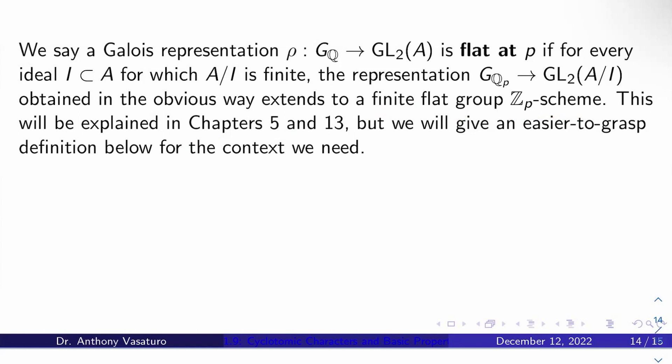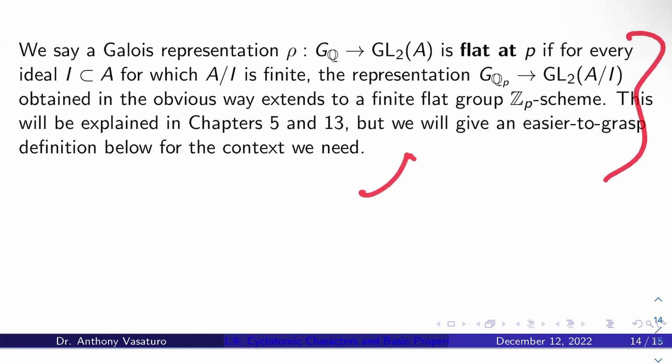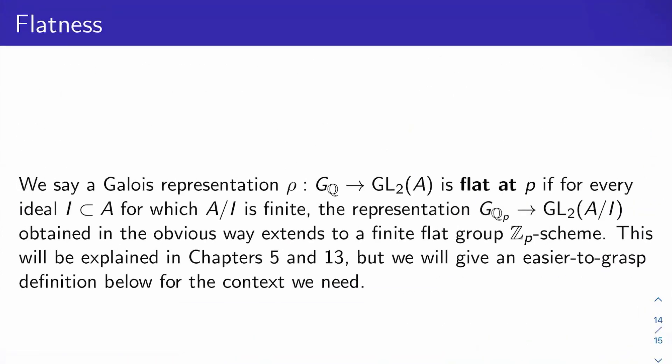All of this will be explained in more detail in chapters five and thirteen. Just think of it as a Z_P-scheme that's a group with some special nice properties. I'll also give an easier-to-digest version of this flatness definition once I write down specific examples of Galois representations — like those attached to elliptic curves — to which we want to apply it. Next video, we will start looking at Galois representations attached to elliptic curves. We'll need three major types: the cyclotomic character, those attached to elliptic curves, and those attached to cusp forms. Thanks for watching and I'll see you then.